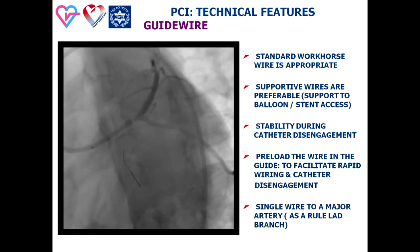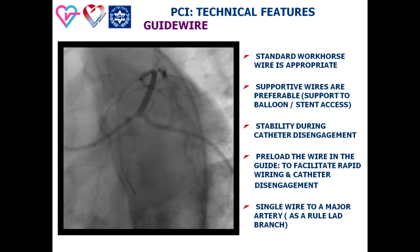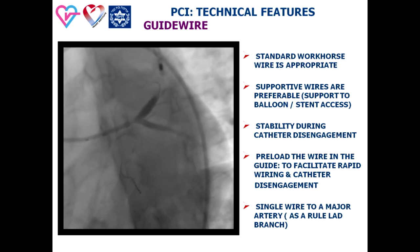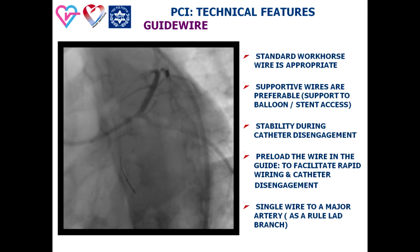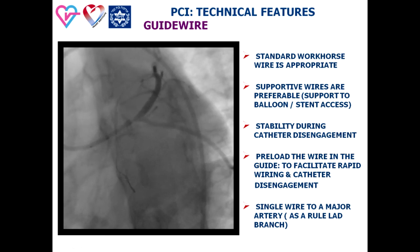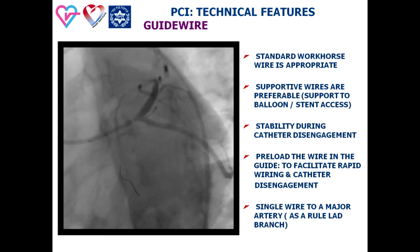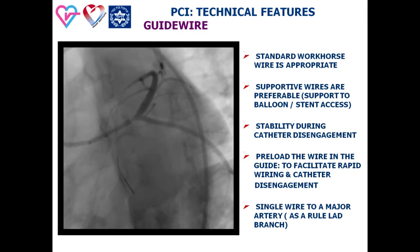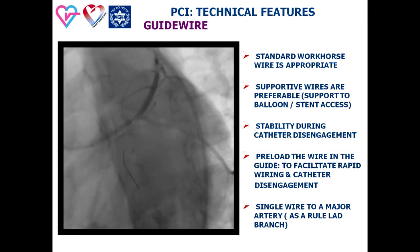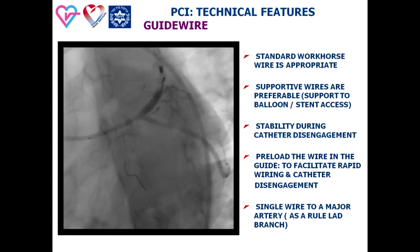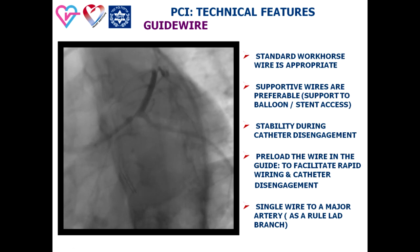Regarding the coronary guide wire: insertion of the guide wire is as a rule not a problem. A standard workhorse wire is appropriate. Supportive wires are preferable for long-stent access, especially when the guiding catheter has not provided sufficient support. The guide wire also facilitates engagement and disengagement of the catheter and stability of the system. The common recommendation is to preload the wire in the guiding catheter to facilitate rapid wiring and disengagement.